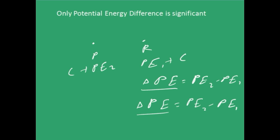So let us follow a convention here. The convention says that the potential energy at infinity is zero. If your charge or system of charges is here, and you take a sphere of radius infinity from this charge or system of charges, on all the points on this sphere your potential energy is going to be zero. That is what I mean by saying potential energy at infinity is zero.